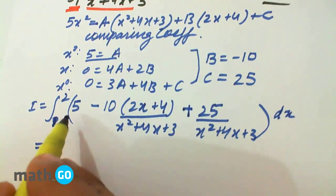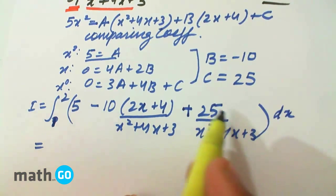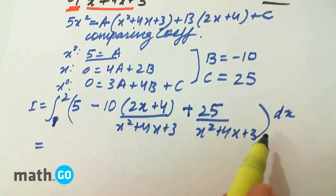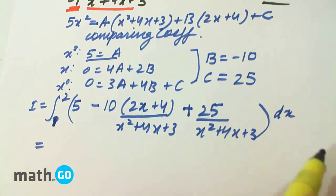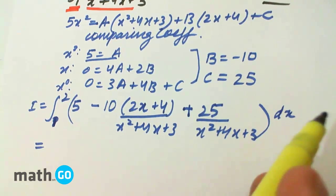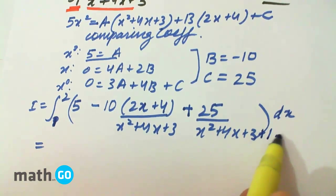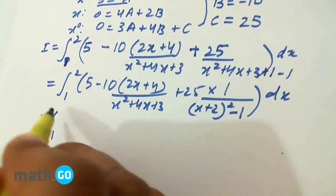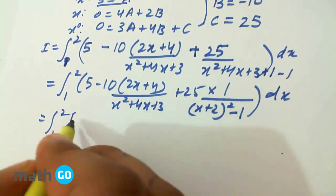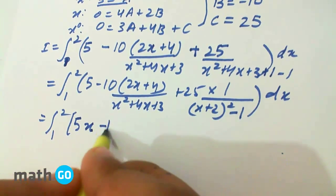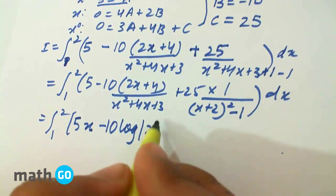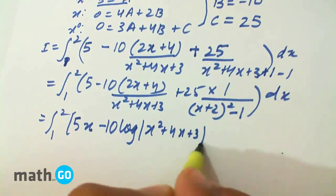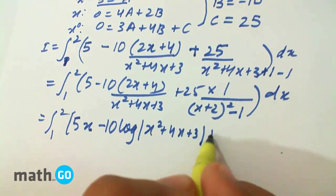So how do we do this further? We make a perfect square of x plus or minus some constant. We convert it into 1 upon x² plus a² form. We add and subtract 1. Simply integrating, we get from 1 to 2: 5x minus 10 log of x² plus 4x plus 3 plus the integrated third term.